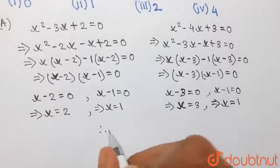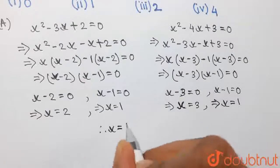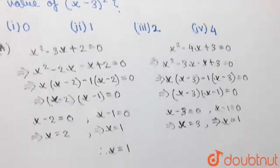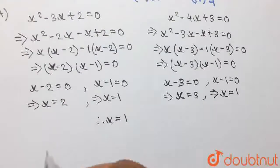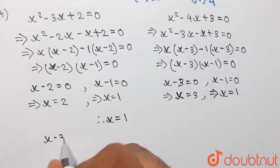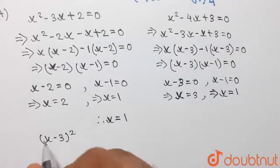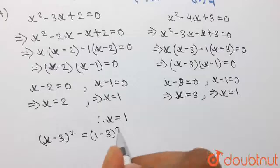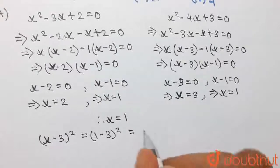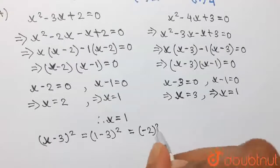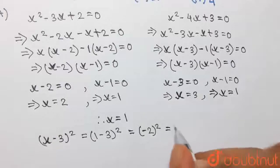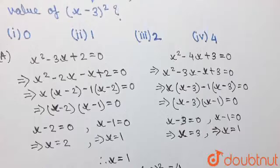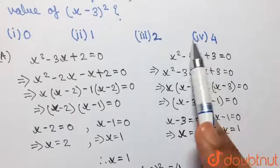Now that we have been asked to find the value of (x-3) whole square, we can write (x-3)²=(1-3)²=(-2)²=4. Hence, the required answer is 4, and going through the options, we can see that option 4 is the correct option.